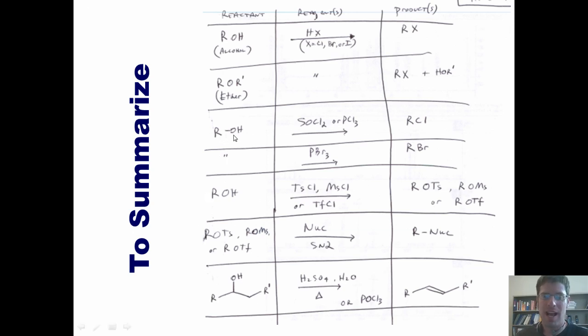Separately, if I treat an alcohol with SOCl2 or phosphorous trichloride, I will replace the OH with a chlorine. If I treat an alcohol with PBr3, I can replace the OH with a bromine. If I treat an alcohol with tosyl chloride, mesyl chloride, or triflyl chloride and pyridine, which I forgot to write here, I will convert the ROH into an ROTs, an ROMs, or an ROTf. Why in the world would I ever want to make these? The reason is because they are much better leaving groups than an OH.